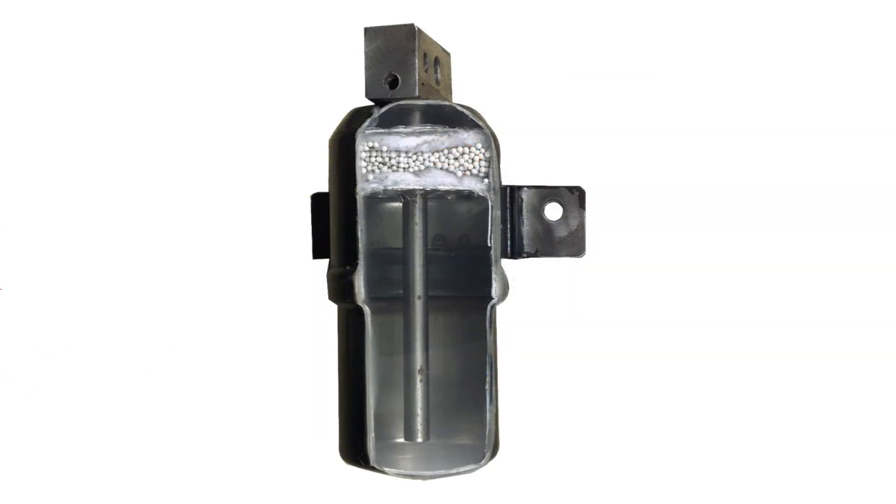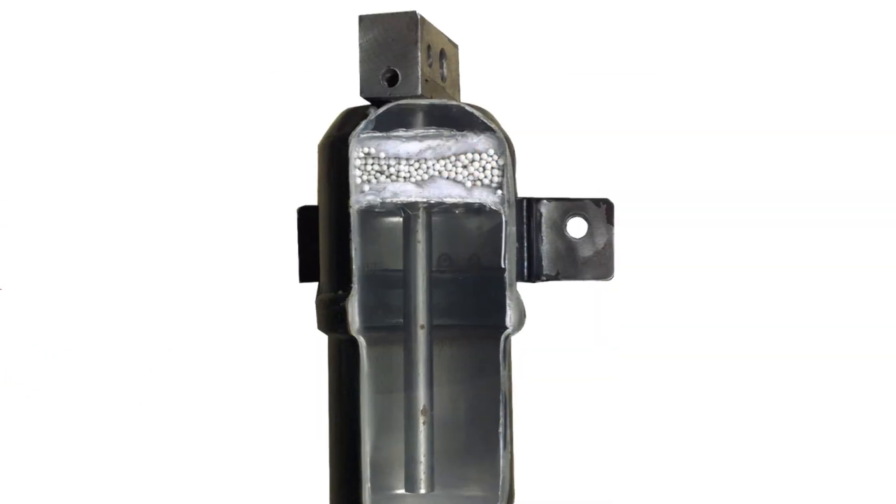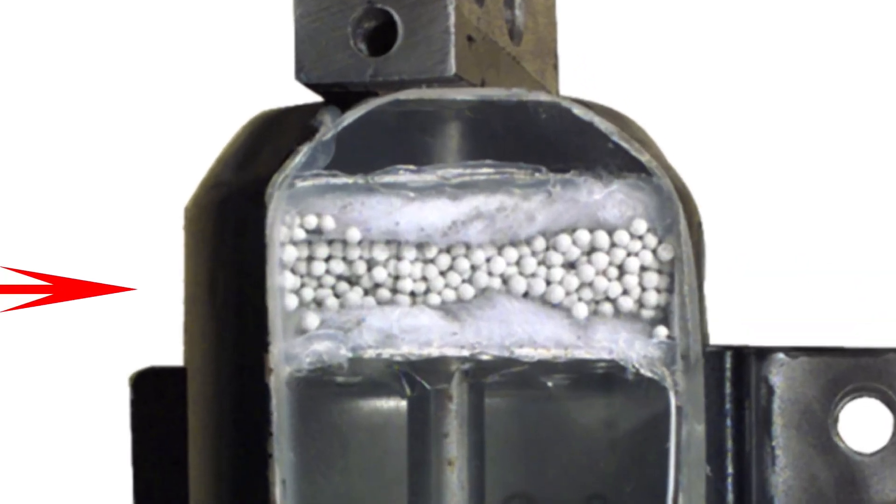Accumulators and receiver dryers cannot be flushed because they contain desiccant material which can disintegrate on contact with flush solvent and contaminate the entire system.